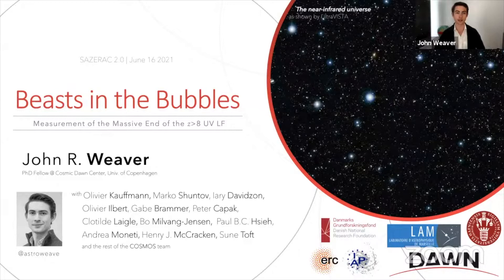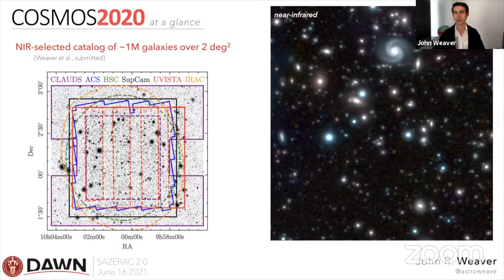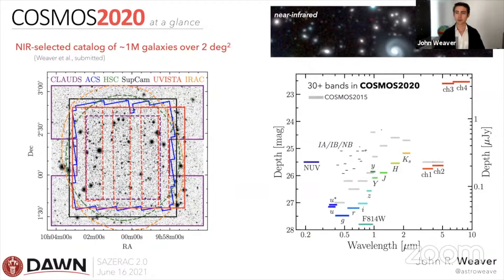Thanks to my collaborators without whom this work would not be possible. As many of you may know, the COSMOS 2020 catalog is nearing publication and release. It is a near-infrared selected catalog of about a million galaxies over the two square degrees of the Cosmic Evolution Survey. On the right-hand side I show an RGB image of the near-infrared bands, giving a sense of the density of sources in these ground-based images and the diversity of galaxies.